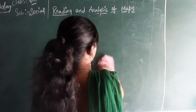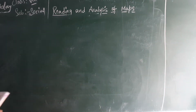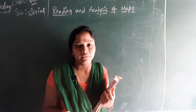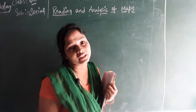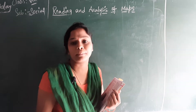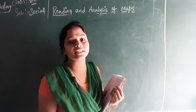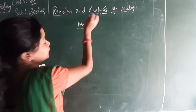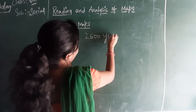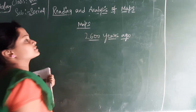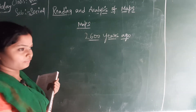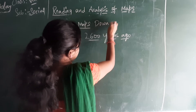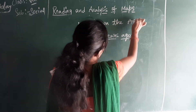Now coming to the point: how did the olden people preserve the maps? In earlier days only we have maps. How did people introduce the maps? How they have invented the maps, and for what reason they have prepared them? These maps have been introduced 2,600 years ago. Now we are going to see how the olden days people have used this map — that is, map down the ages. The topic is map down the ages.